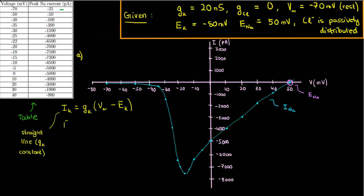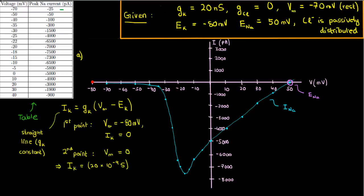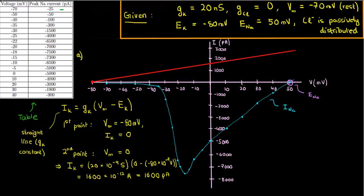To draw this straight line, we need two points. The first point can be the reversal potential, or the voltage at which the potassium current is zero — that's negative 80 millivolts. So at negative 80 millivolts, the potassium current is zero. For the second point, let's use V equals zero. In this case, the potassium current is 20 times 10 to the negative 9 siemens times (0 minus negative 80 times 10 to the negative 3 volts), giving us 1600 picoamps. Joining these two points gives us the IV curve for potassium, and where it crosses the voltage axis is the reversal potential.